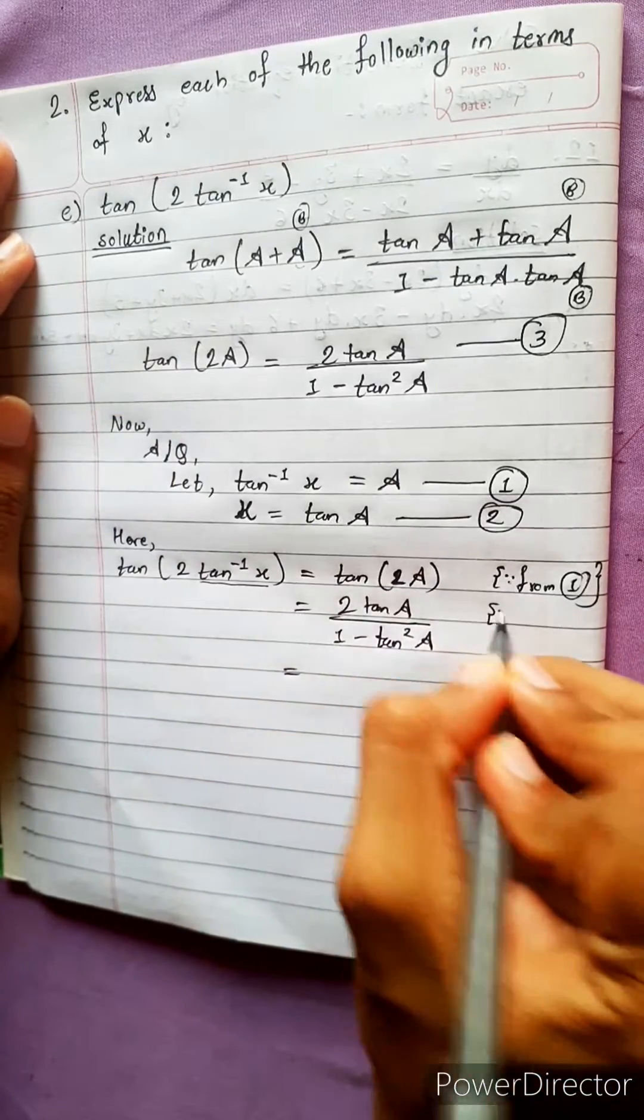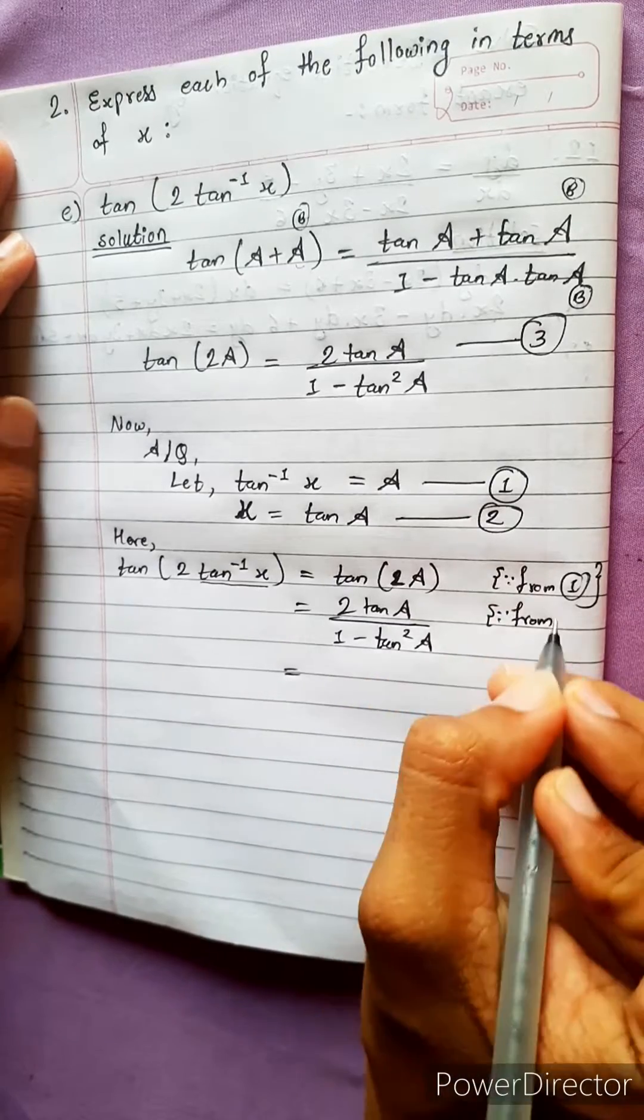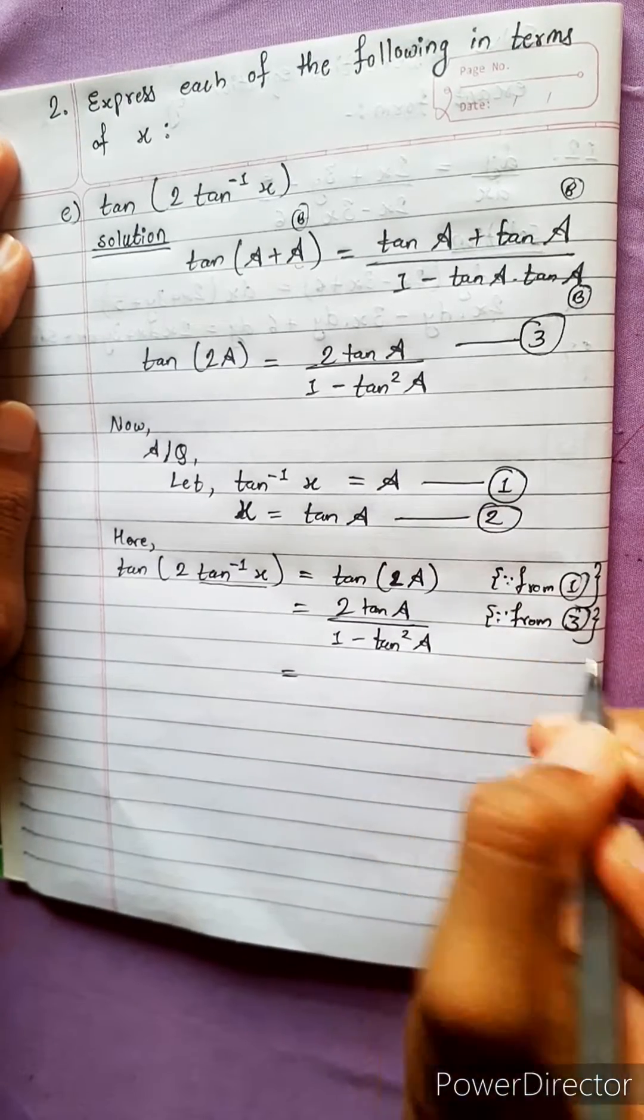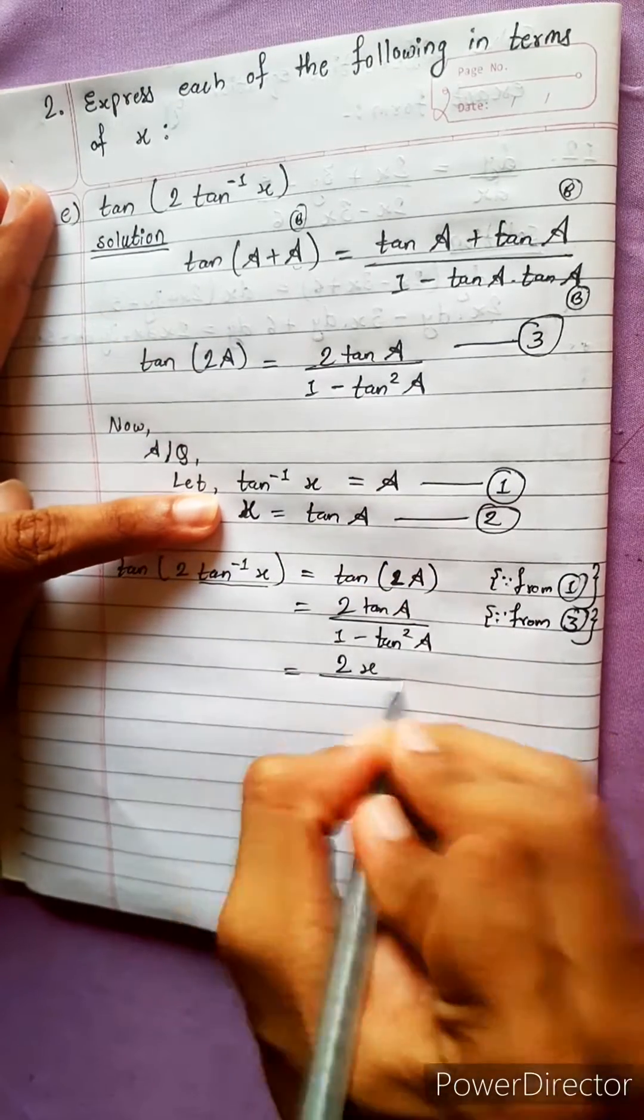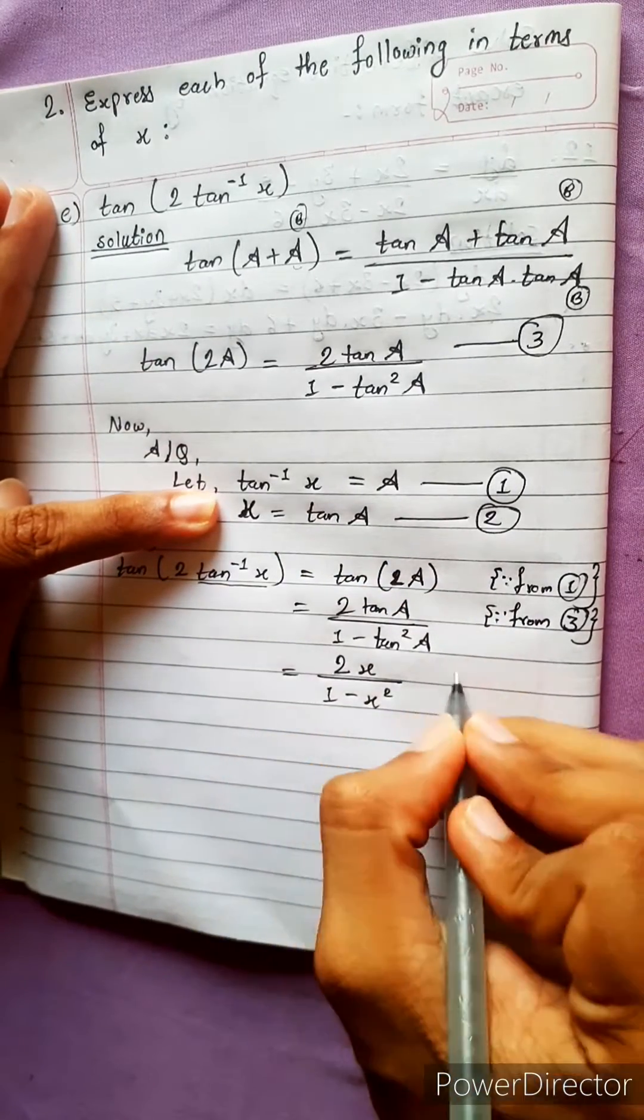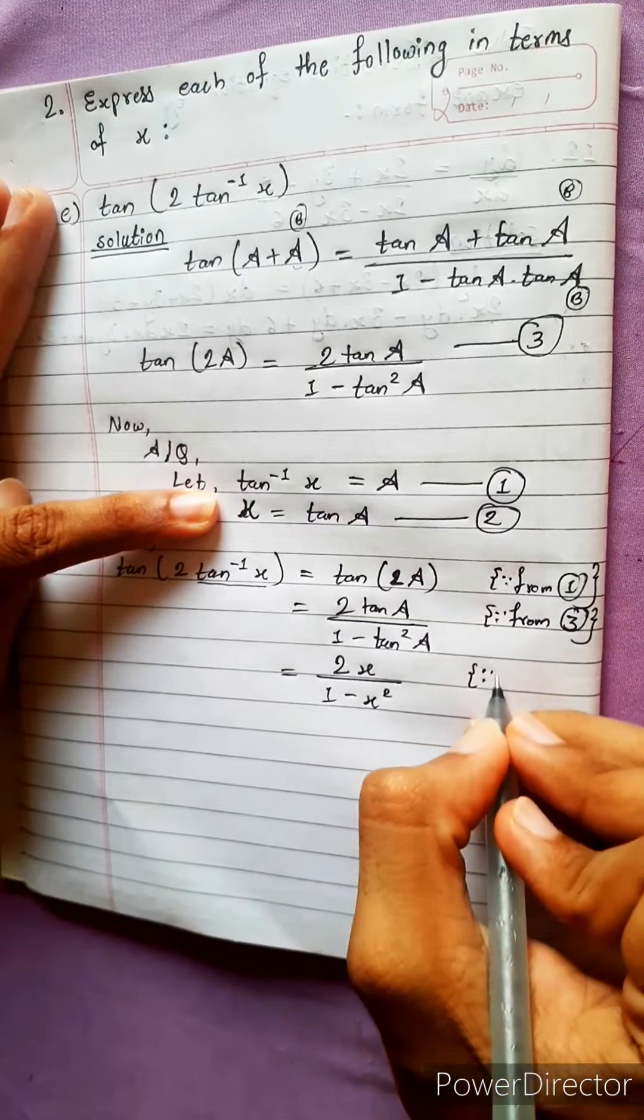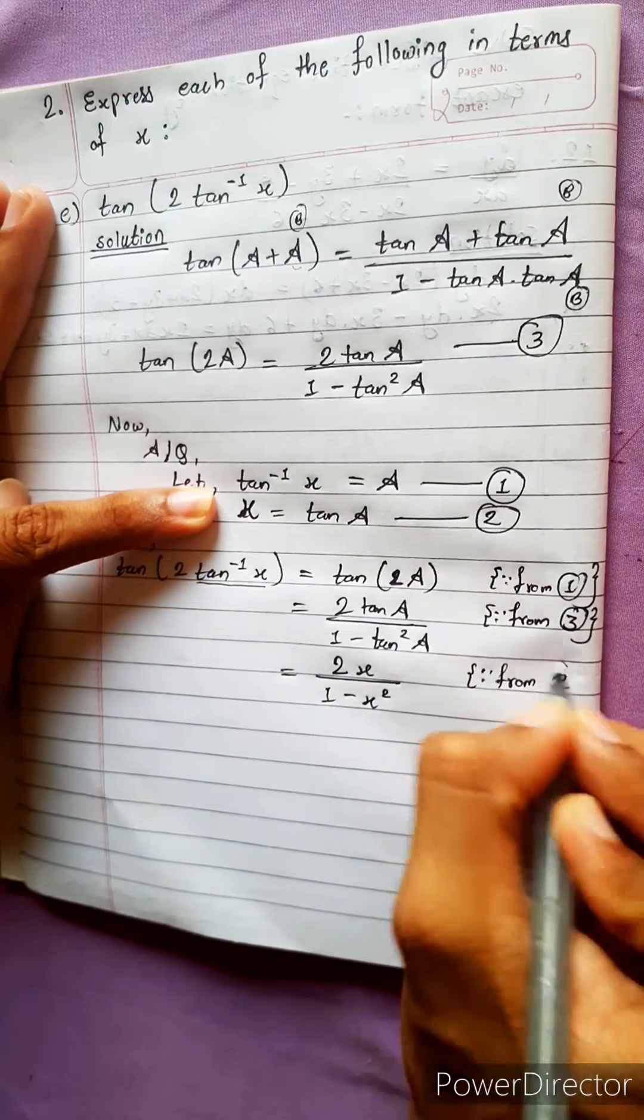Now, this from where we write? We write it from equation 3. Okay. Now, 2 tan A is x, 2x by 1 minus x square. And this x from where we got? We got this from equation 2. So, these are very useful. We got the answer.